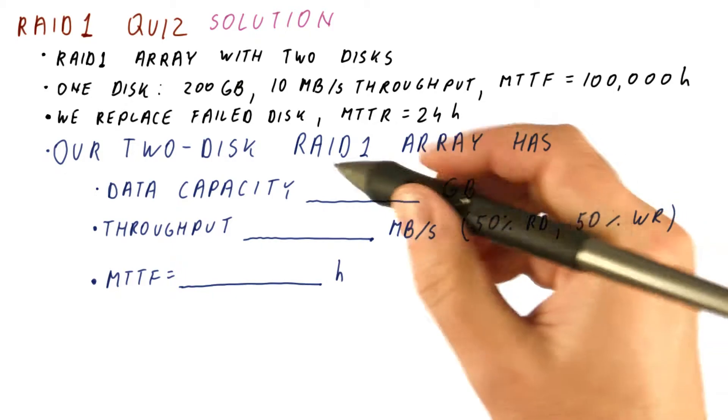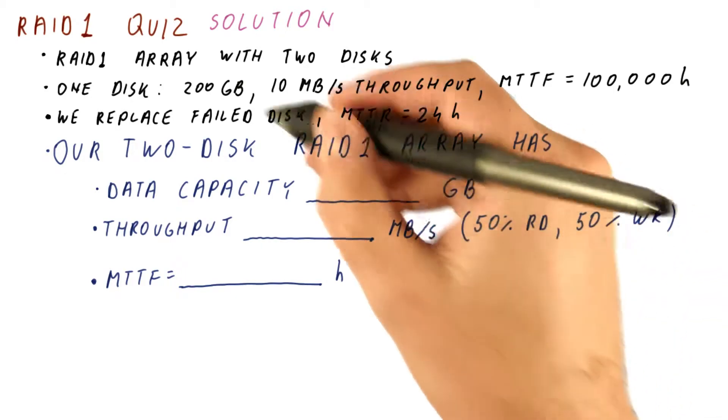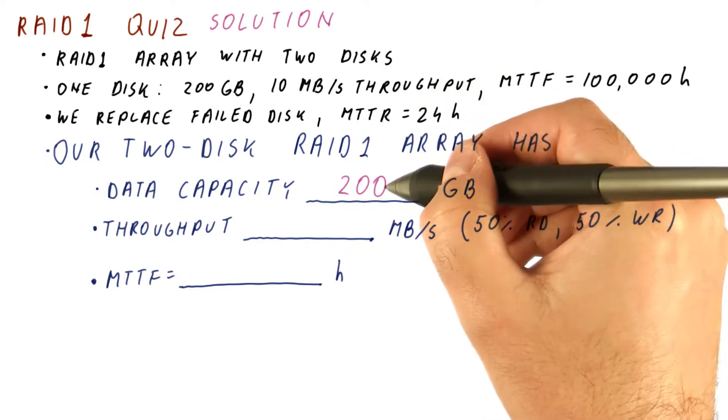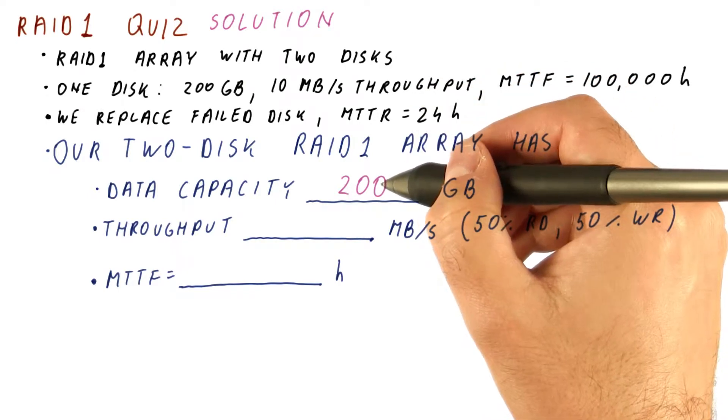So in a two disk RAID 1, the data capacity is the same as for one disk. That's because both disks are storing exactly the same data, which allows us to survive the failure of one disk.